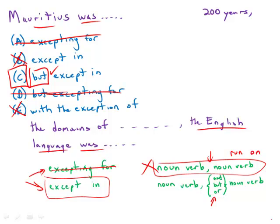And the only one that is correct is C, which has the correct idiom. It has the conjunction needed to separate the two independent clauses. It is by far the best answer choice.